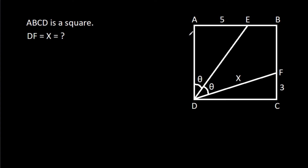In this video, we have been given that ABCD is a square, and angle ADE is theta, angle EDF is theta, and AE is 5, CF is 3, and DF is x. We have to find x.